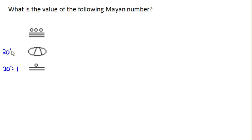The next is the 20 to the 1, or 20's place. And the topmost here is the 20 squared, or 400's place.